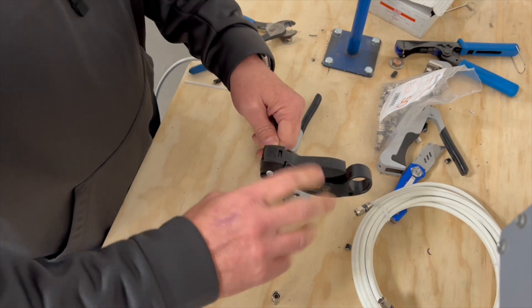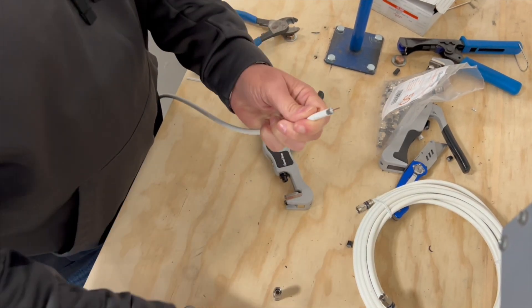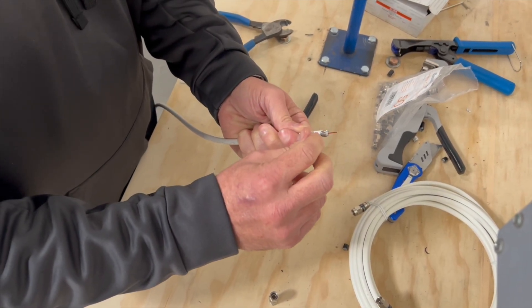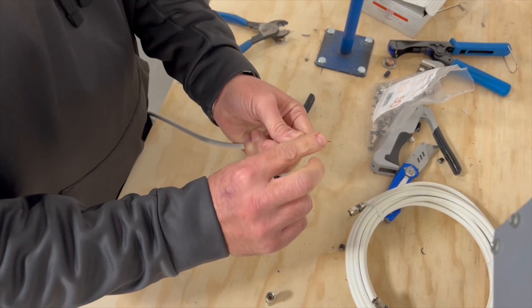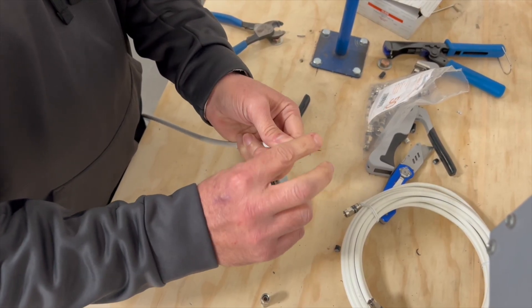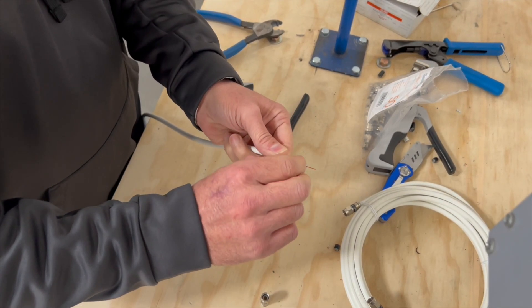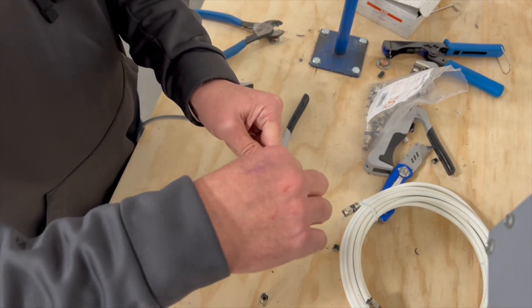Once it gets kind of loose, you can pull that off and you will see the braids here. The trick is to pull the braids back. If you do not pull the braid back, it's going to make it really difficult to push on a connector.